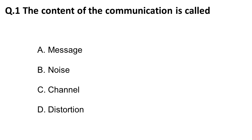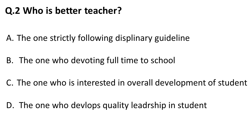The first question is: the content of communication is called what? The content of communication is called a message. The message passes from a channel to the receiver, and the sender is the one who sends the message. The correct answer is: the content of communication is called a message.